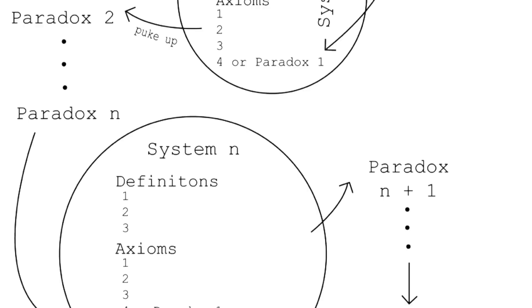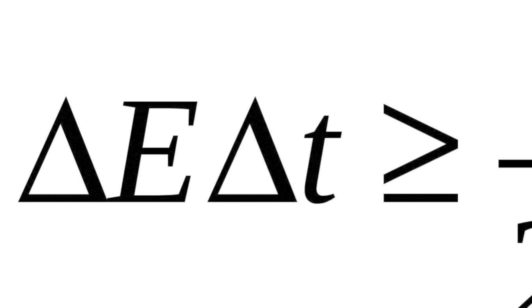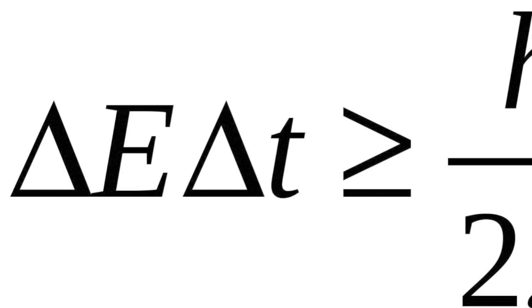The solution of the problem of absolute certainty, as well as that of the problem of constructing an ethics by analogy with knowledge, is negative. This is the modern answer to an age-old quest.